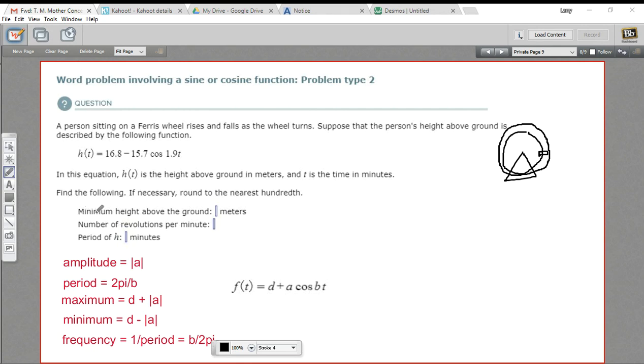Let's start by looking at the minimum height. The minimum height, the closest this person is going to get to the ground, the smallest value this function has. It depends on the amplitude of the function and also this vertical translation. So our formula for this is that vertical translation d minus the amplitude.